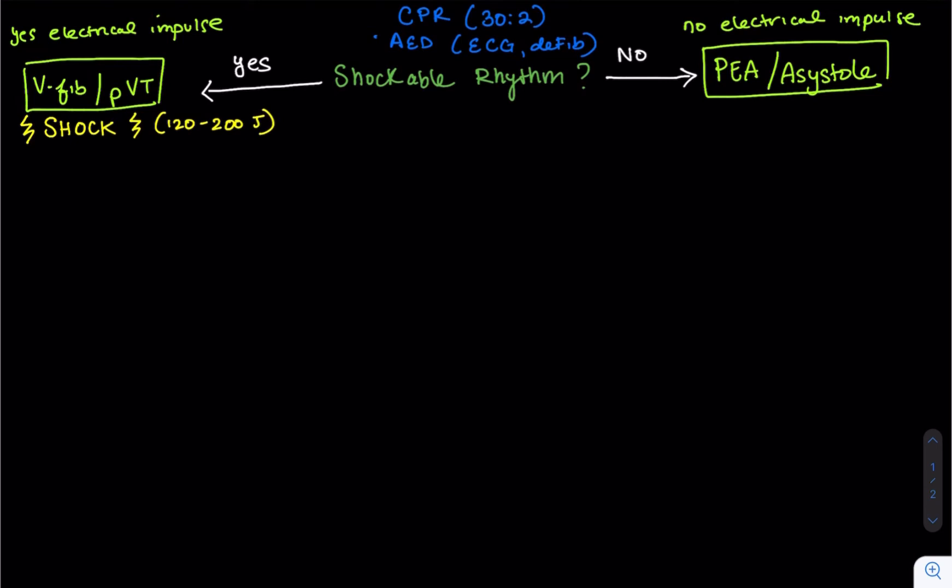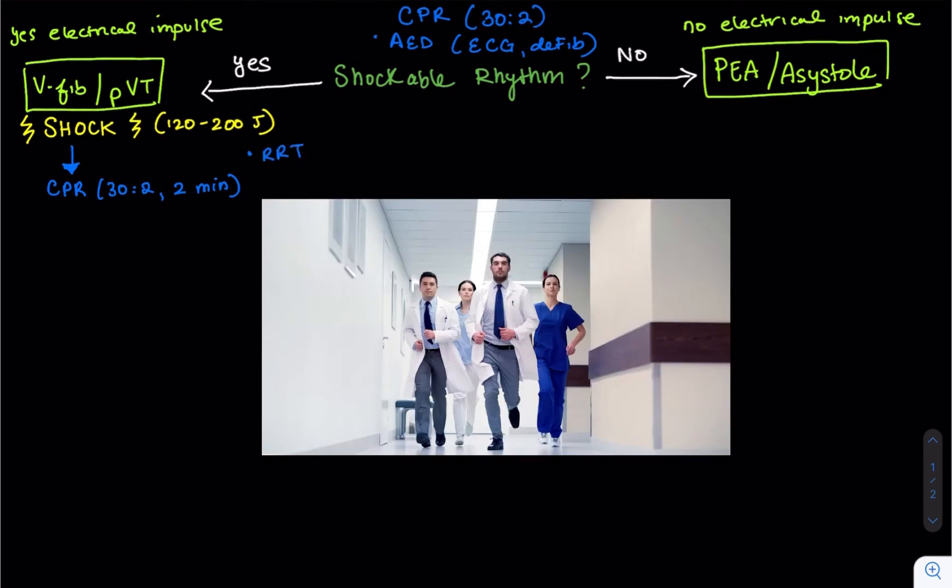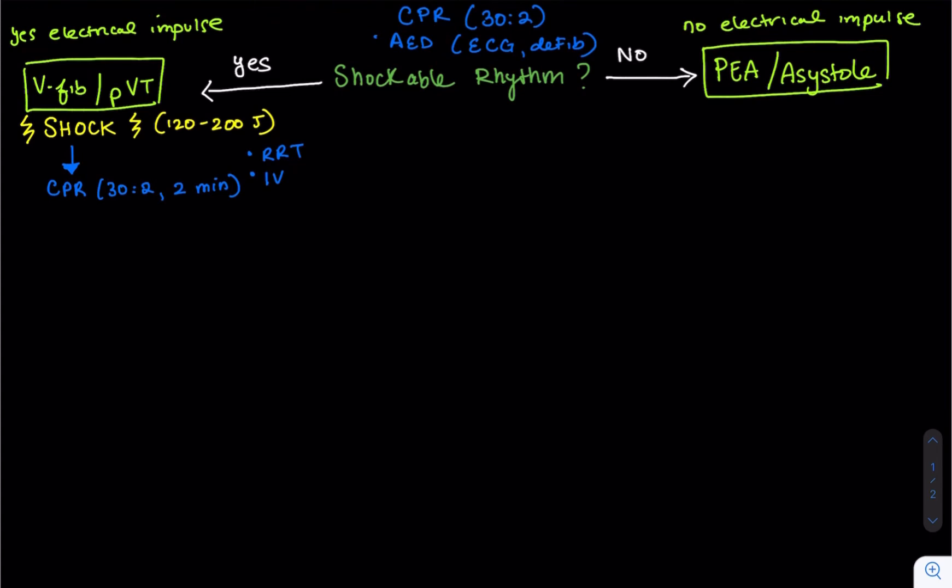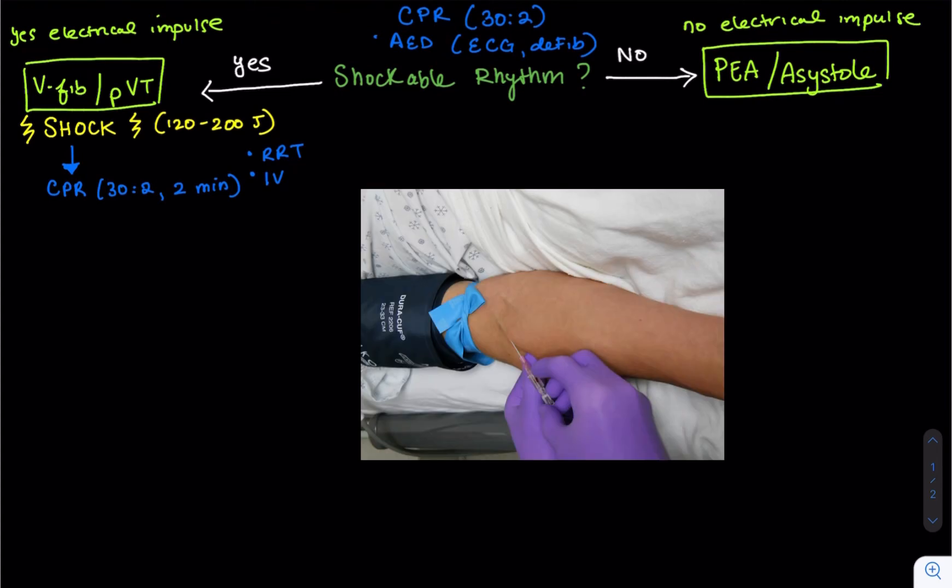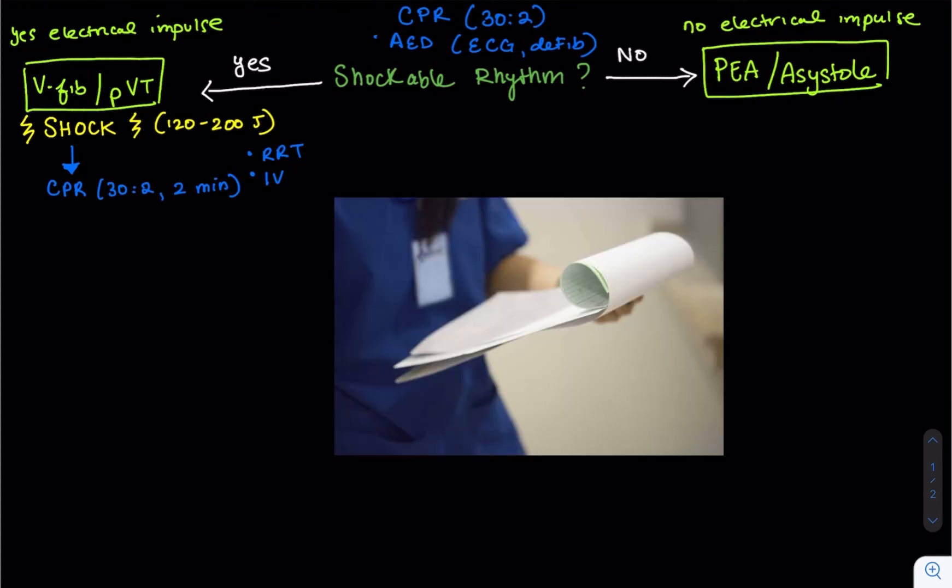From then on, you're going to continue quality CPR for about two minutes. And at this point, you should have the RRT, the rapid response team. The RRT gang arrives. A nurse would try to start an IV. And there should be another nurse documenting and keeping track of time. It's going to be really important.